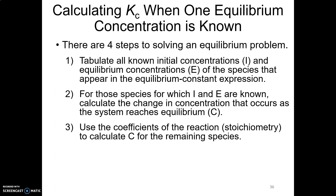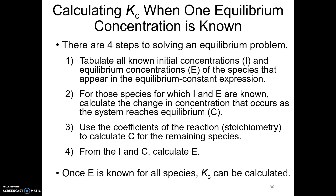I'll talk you through all of this, so don't worry — right now we're just talking through the steps. After you know the changes and the initial concentrations for the remaining substances, you can figure out the rest of your equilibrium concentrations. Then once you have all equilibrium concentrations, it's just plug and chug into the K expression as we did last video. But it takes us four steps before we can do that.